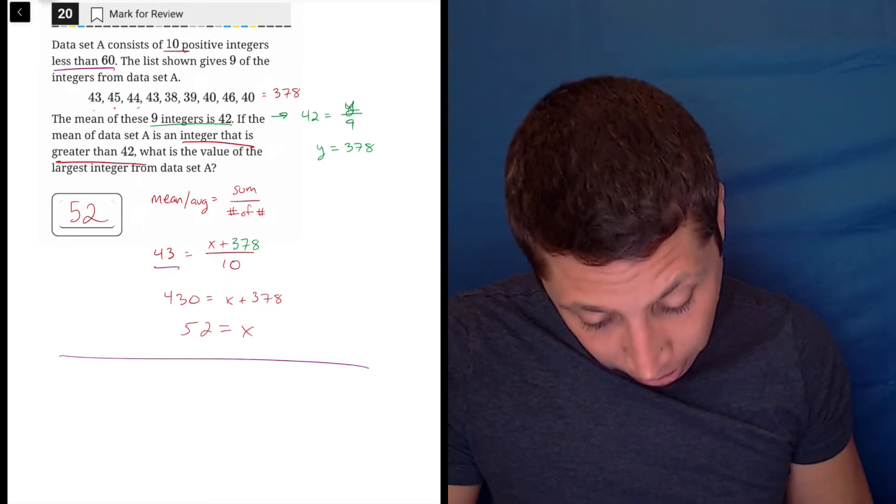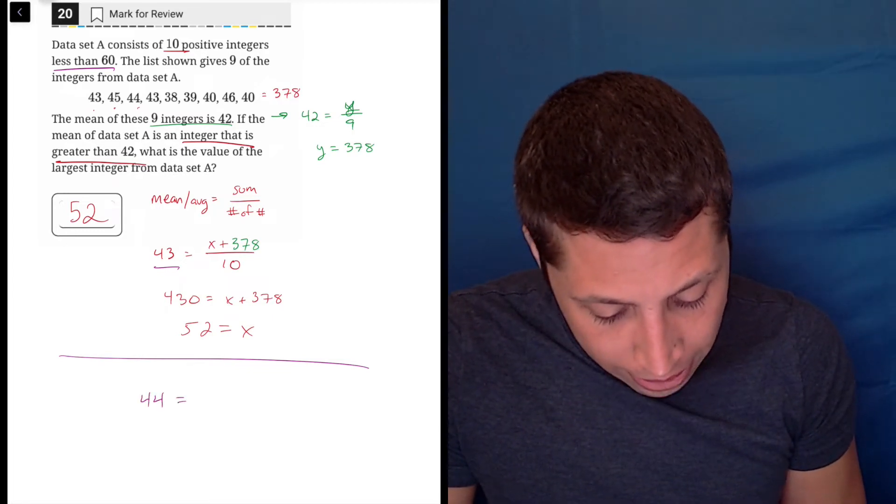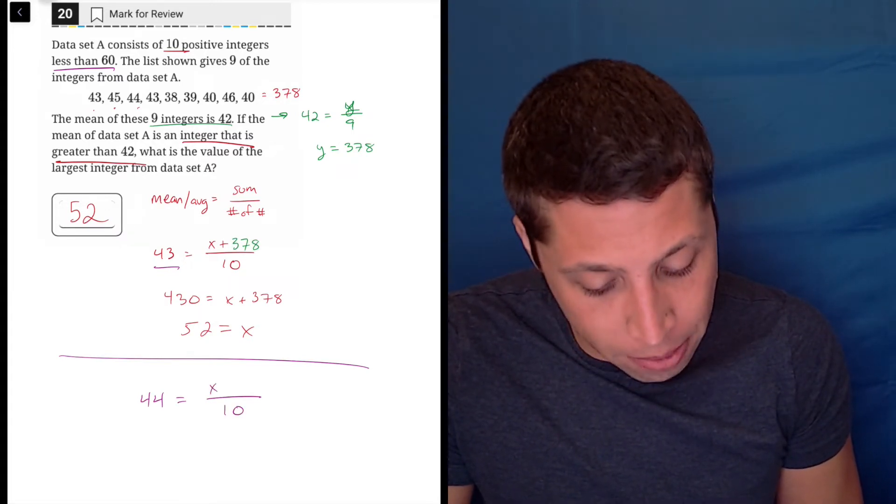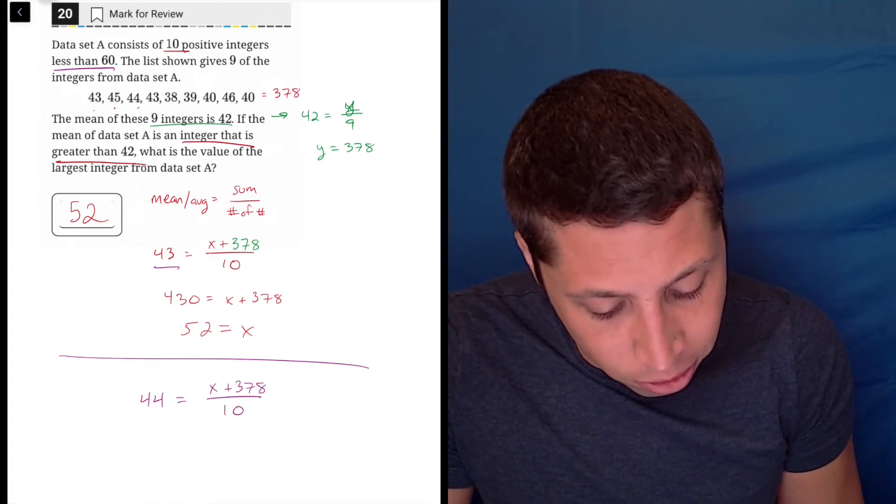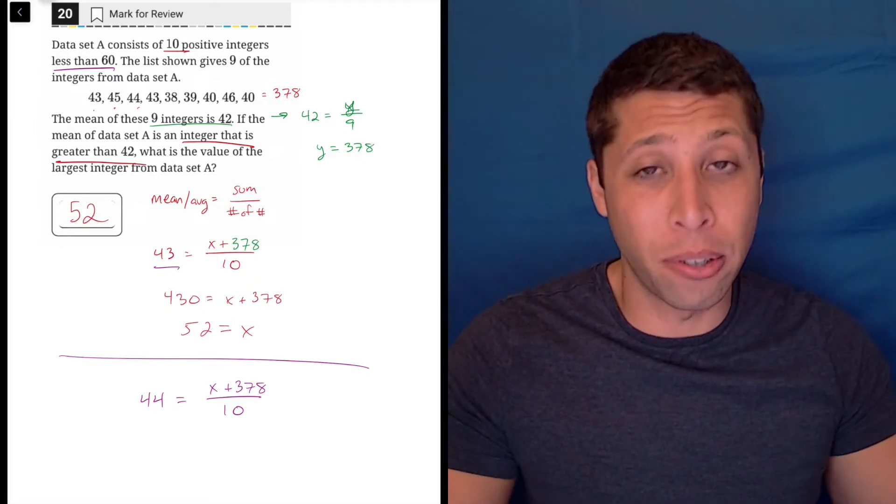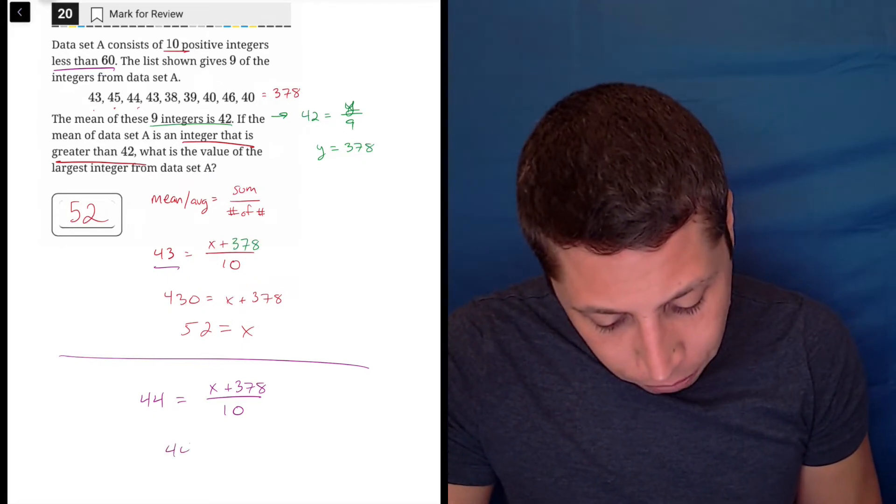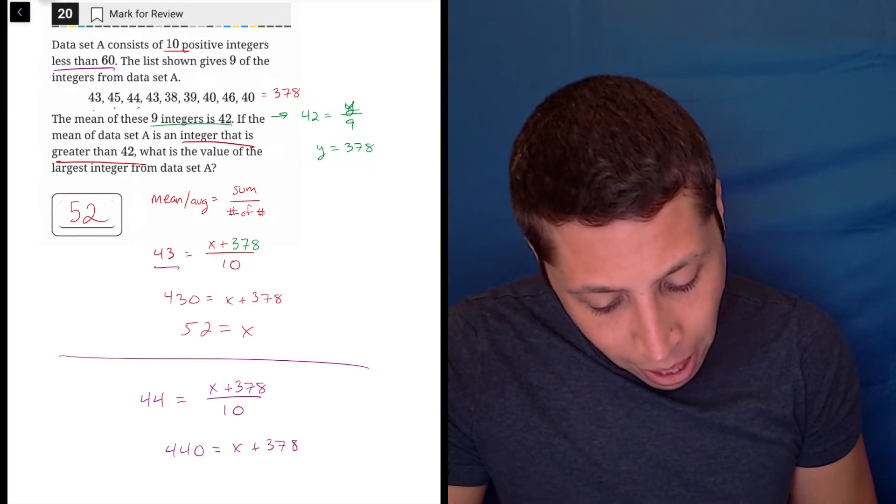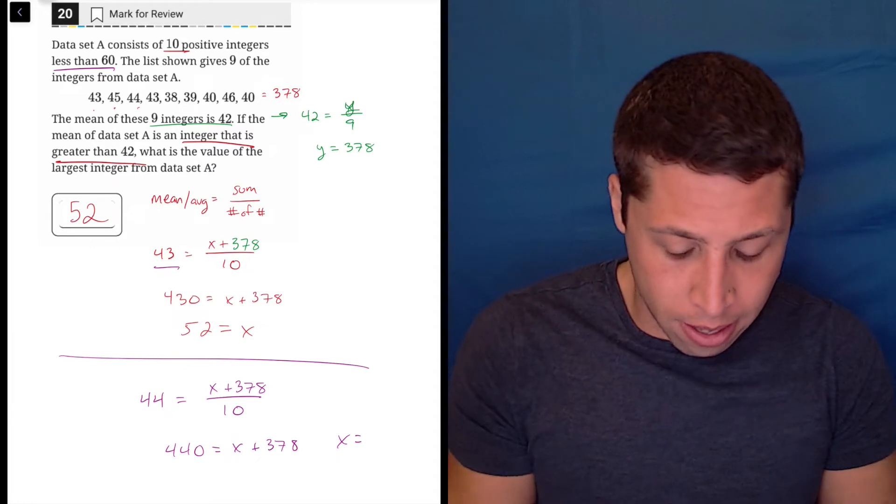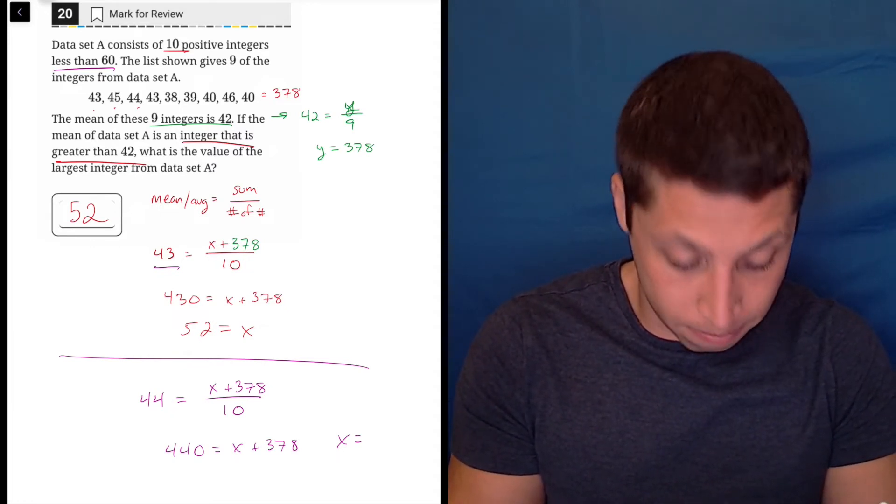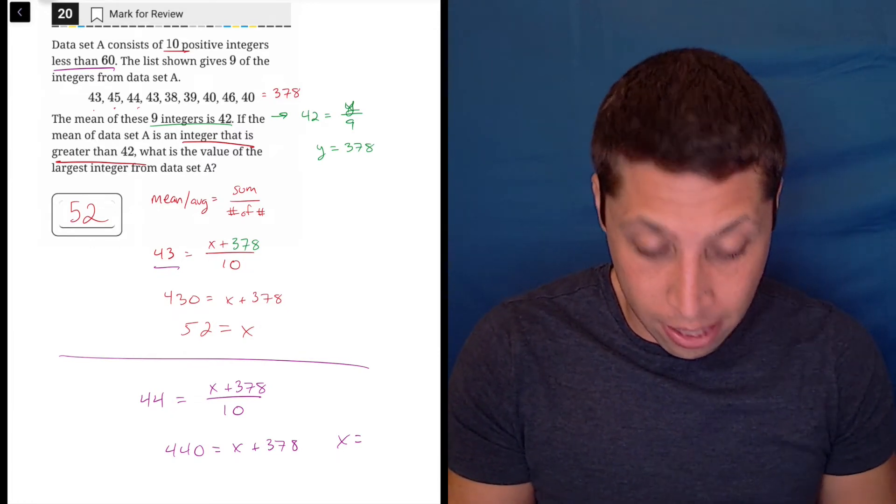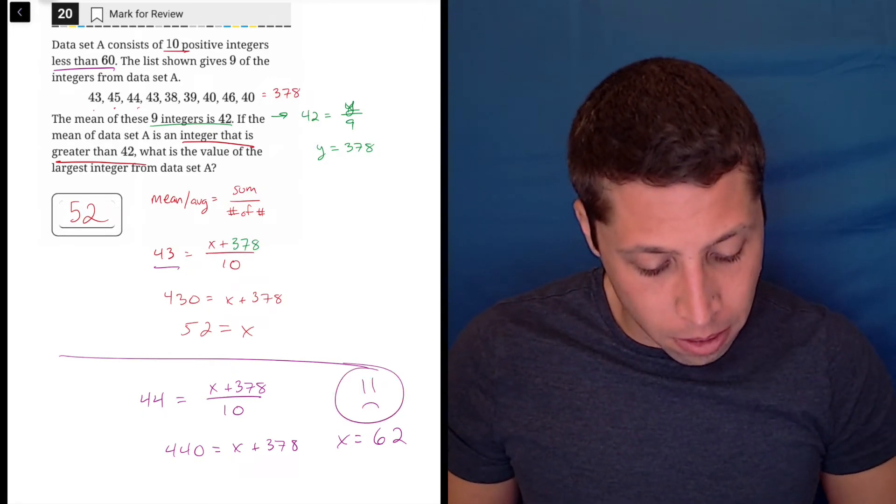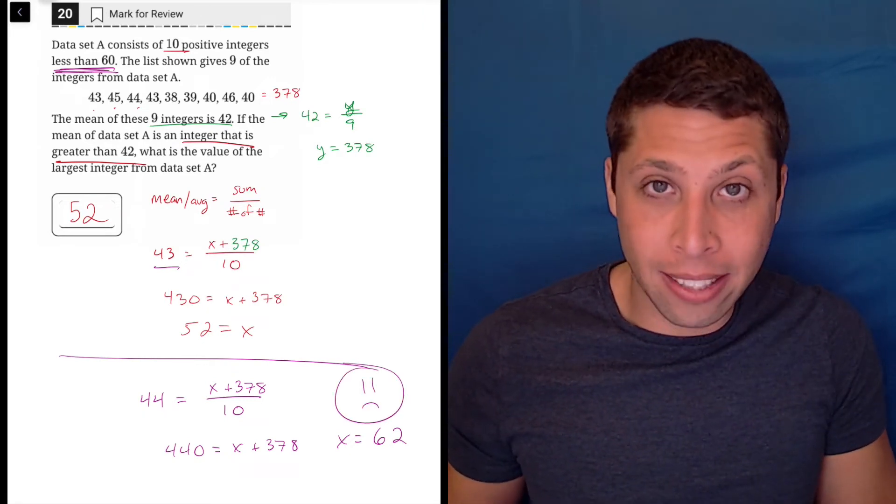So 44 is the mean. We still have 10 numbers. We still have a mystery and we still have 378 for the other nine numbers that we know. So now we have 440 equals X plus 378. Do that subtraction and we're going to get that 440 minus 378 is 62. Well, that's a problem because they told me it has to be less than 60.